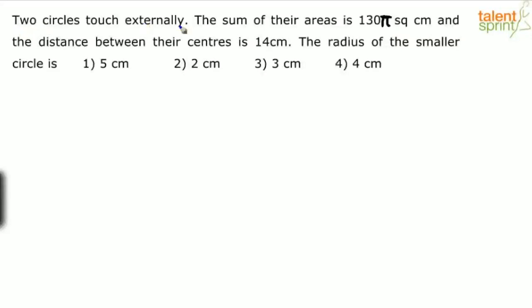Two circles touch externally. The sum of their areas is 135 square centimeters and the distance between their centers is 14 centimeters. The radius of the smaller circle is — the given answer options are 5 centimeters, 2 centimeters, 3 centimeters, or 4 centimeters.